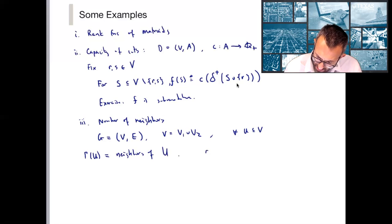Then you can again check, I'll write this as an exercise, that F of U is equal to the cardinality of gamma of U is indeed submodular.